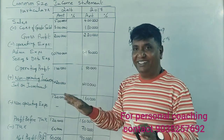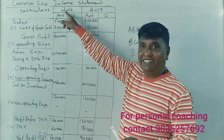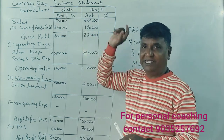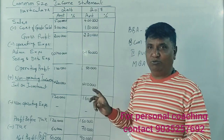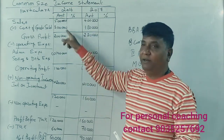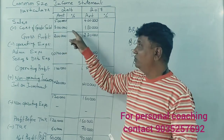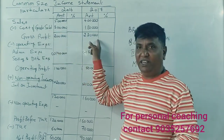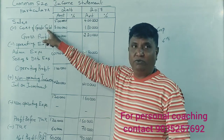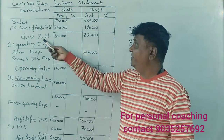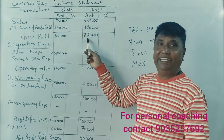The Common Size Income Statement shows, for 2016, the amount and percentage, and for 2017, the amount and percentage. The cost of goods sold is 5 lakhs. Now we calculate the gross profit: 5 lakhs minus 3 lakhs equals 2 lakhs, and 4 lakhs minus 1 lakh 80 thousand equals 2 lakh 20 thousand.